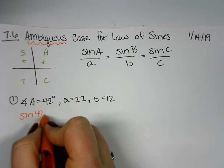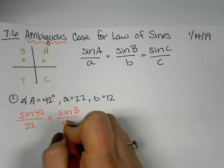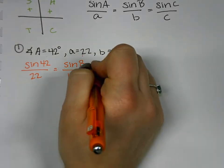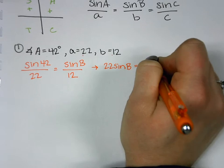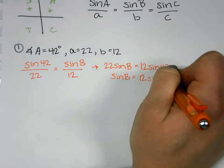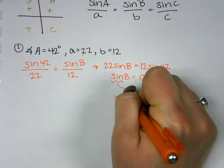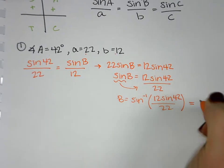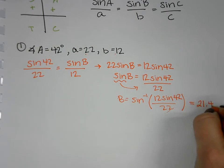So: sine of 42 over 22 equals sine of angle B over 12. Cross multiplying gives us 22 sin B = 12 sin 42. Dividing both sides by 22 and taking the inverse sine, we get angle B = inverse sine of (12 sin 42 / 22). When we plug this into our calculator, we end up with 21.406 degrees.